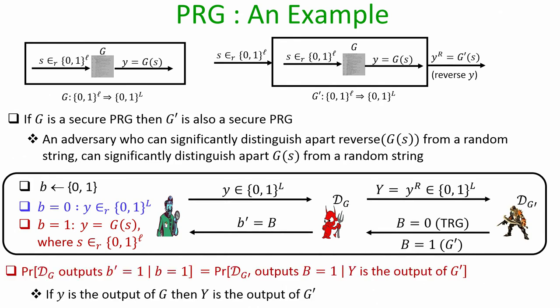If little y is truly random then big Y is also truly random, and if little y is pseudo random then big Y is also pseudo random. Therefore the distinguishing advantage of D_G equals the distinguishing advantage of D_{G'}. This proves that if G is a secure PRG, so is G'.